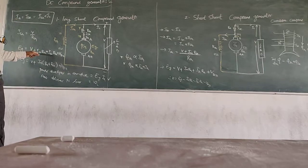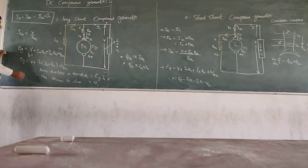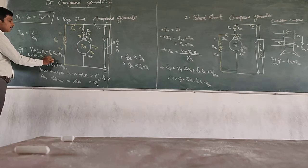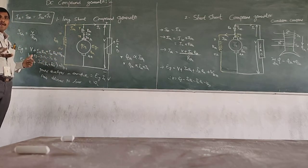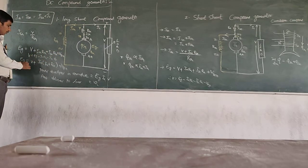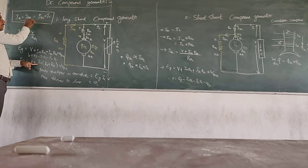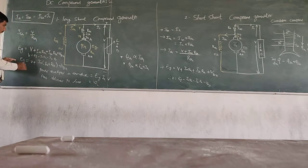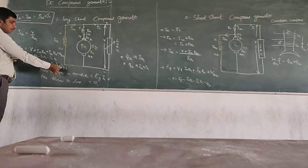So the generated voltage Eg equals V plus Ia·(Ra + Rsc). From this, voltage across the load V equals Eg minus Ia·Ra minus Ia·Rsc. Note that brush contact drop is approximately two volts and can be added. Since Ia equals Isc in the case of a long shunt compound generator, we can write Eg equals V plus Ia·(Ra + Rsc) plus Vbc.